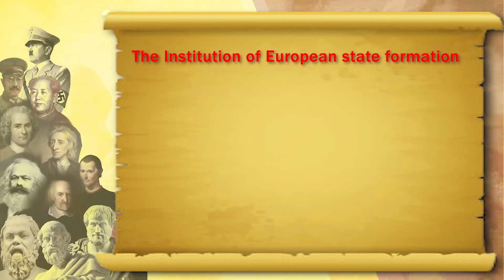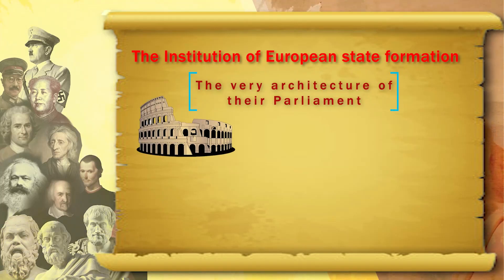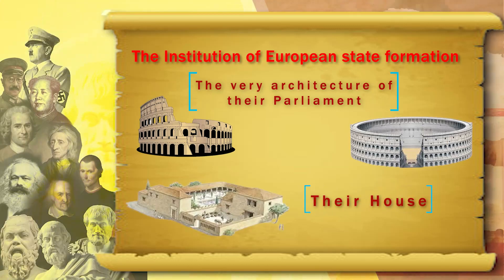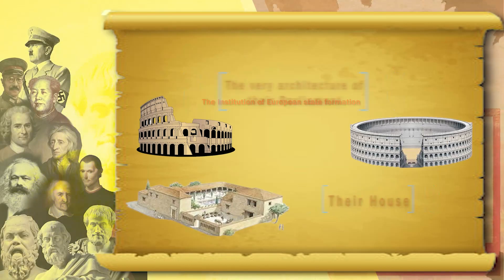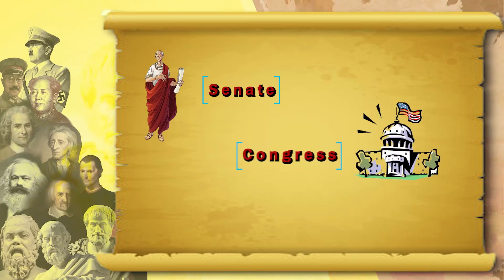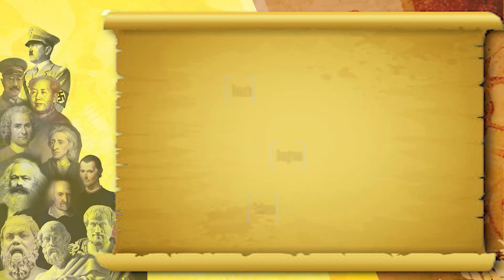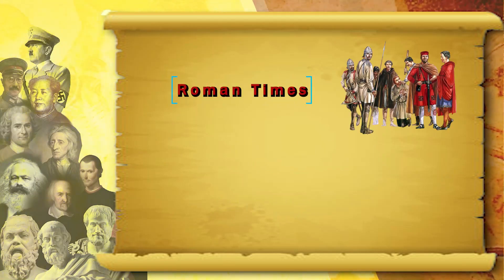Rome is the forefather of the institutions of European state formation. Even today, the very architecture of their parliaments and their houses, the names of institutions like the senate, the congress, the tribune — these are all Roman terms, from Roman times, from Roman democracy.